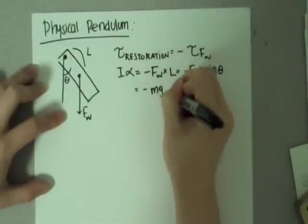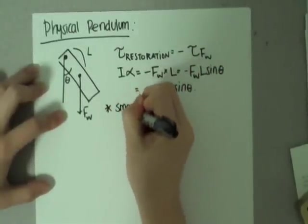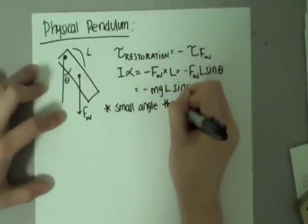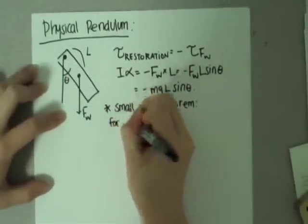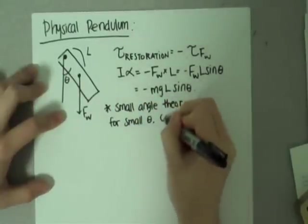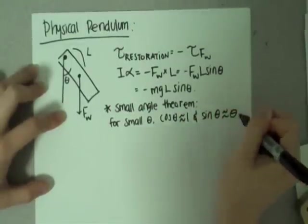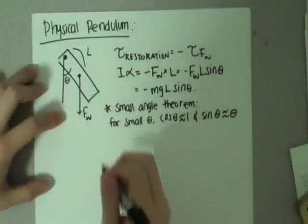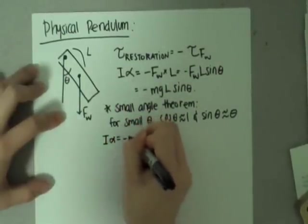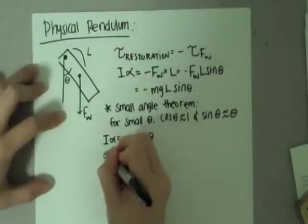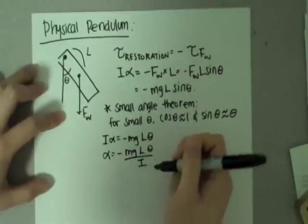Using our knowledge of torques, we can rewrite the torque restoration equation as: moment of inertia times angular acceleration equals negative force of weight times L times sine theta. The small angle theorem is very helpful here. It states that for any small value of theta, cosine of theta equals 1 and sine of theta is approximately equal to theta. Going back to our torque equation, we can restate this as moment of inertia times angular acceleration equals negative mgl times theta. Dividing through, we get angular acceleration equals negative mgl times theta over the moment of inertia.